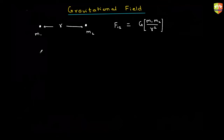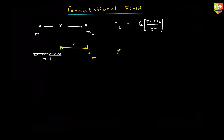Now suppose you have a rod of mass M and length L, and a point mass m at distance R from the rod. Can you directly get the expression for the force between the rod and mass m, just like you got the above expression? Not possible, right?